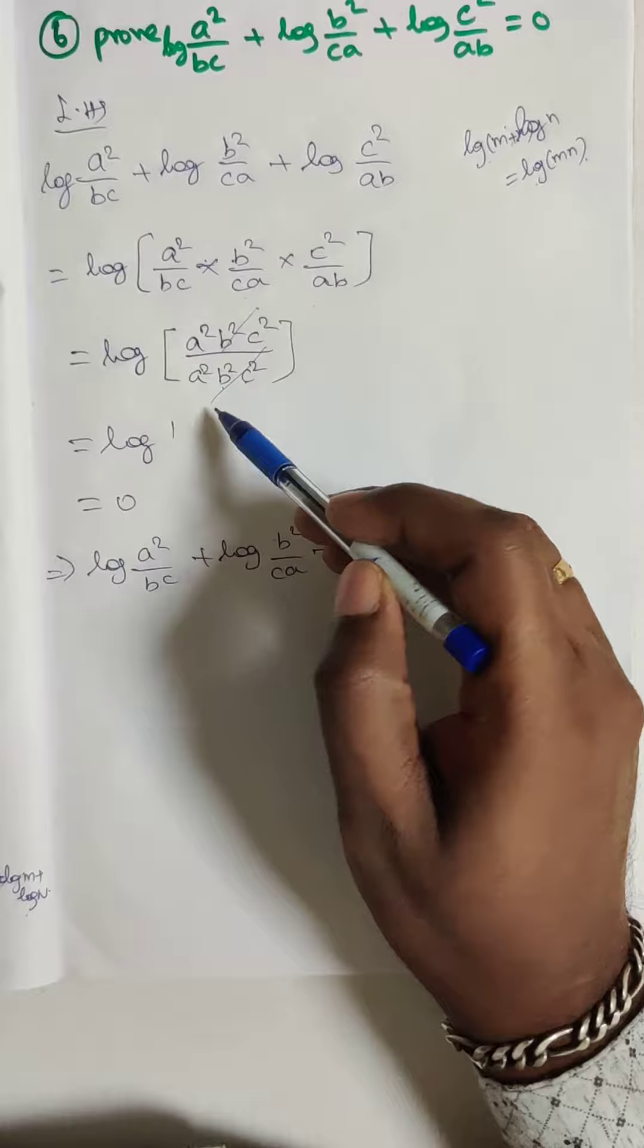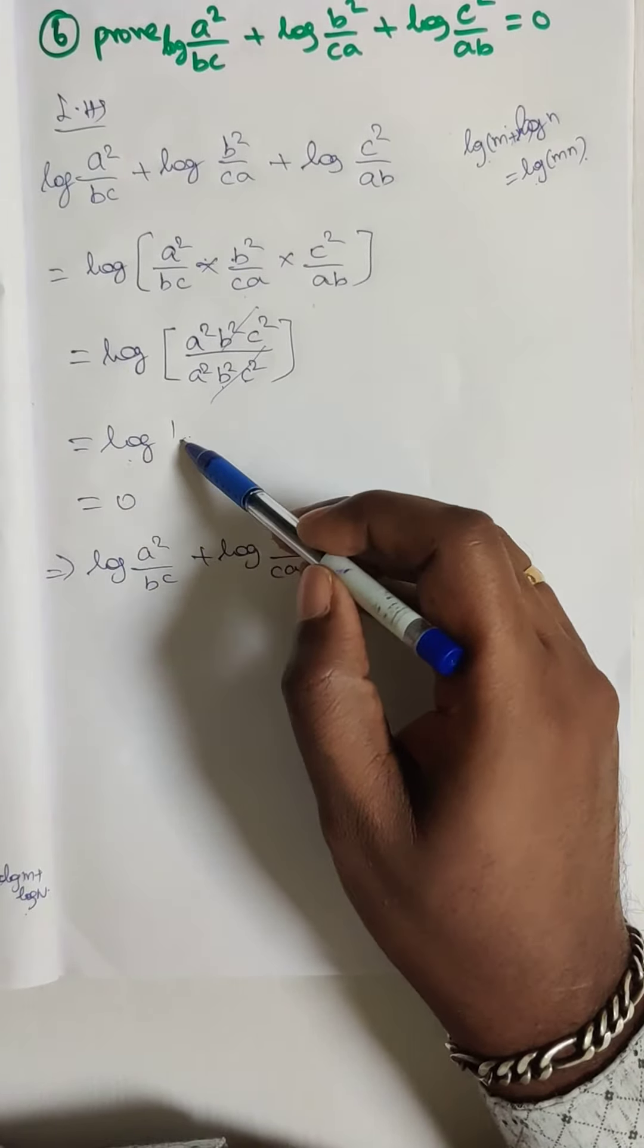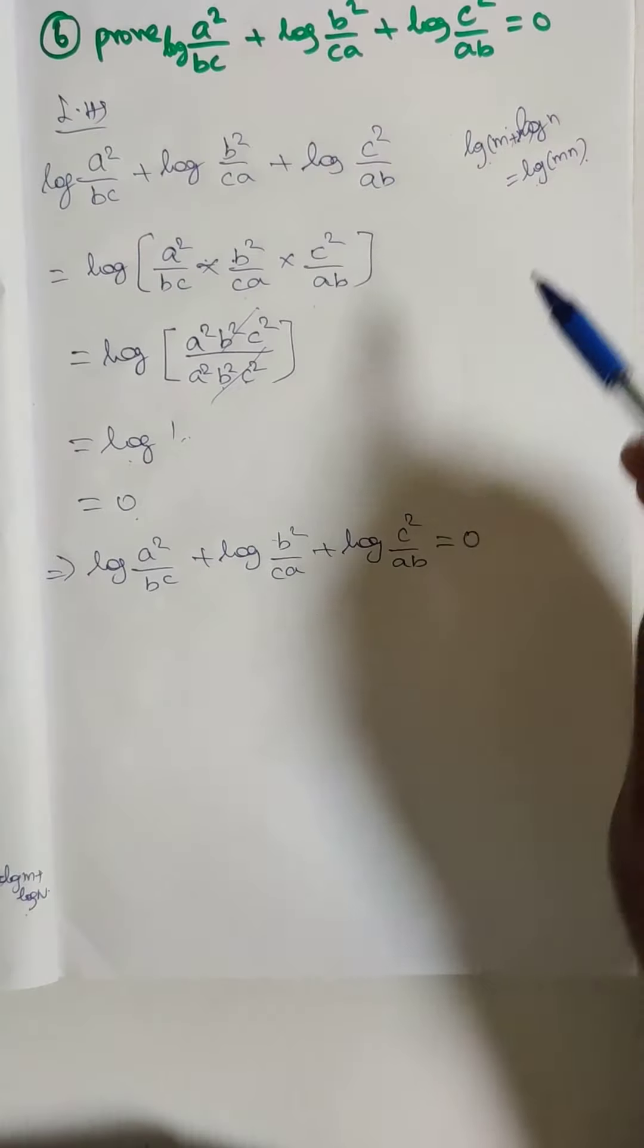So a square b square c square get cancelled. So log 1 is the answer. So log 1 value is 0, so that is the RHS.